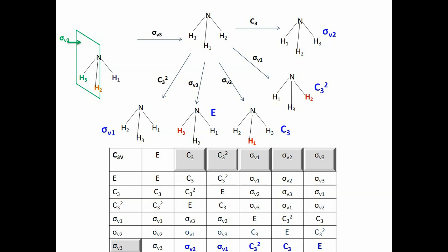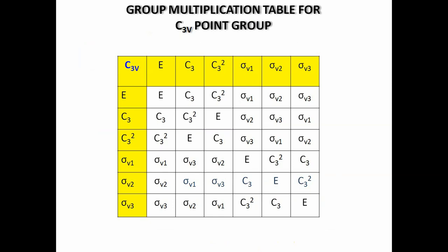The last row of the multiplication table is filled by doing sigma V3 first — H3 stays in its place and H1 and H2 are exchanged. Performing C3 thereafter gives sigma V2 orientation. Sigma V3 followed by sigma V1 generates C3²; sigma V3 followed by sigma V2 generates C3; sigma V3 followed by sigma V3 generates identity; and sigma V3 followed by C3² generates sigma V1. With that, we complete the group multiplication table for the C3V point group. Each row and each column of the multiplication table contains different symmetry operations — no two rows and no two columns are the same.